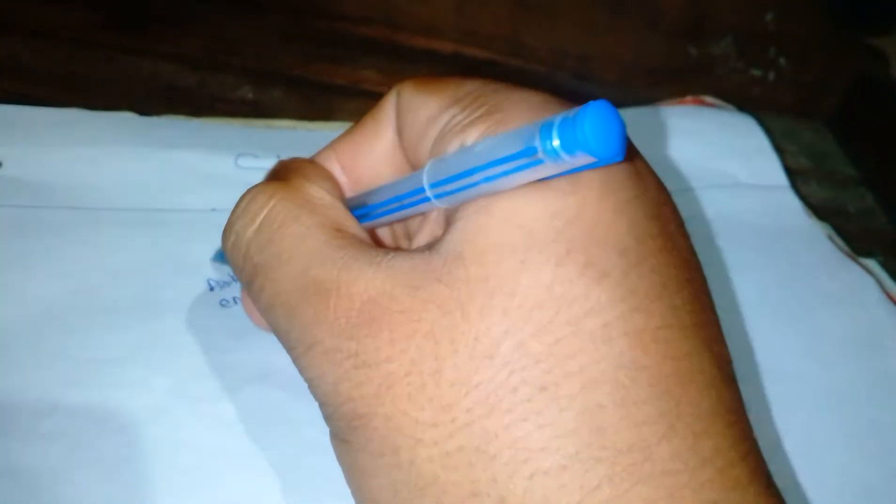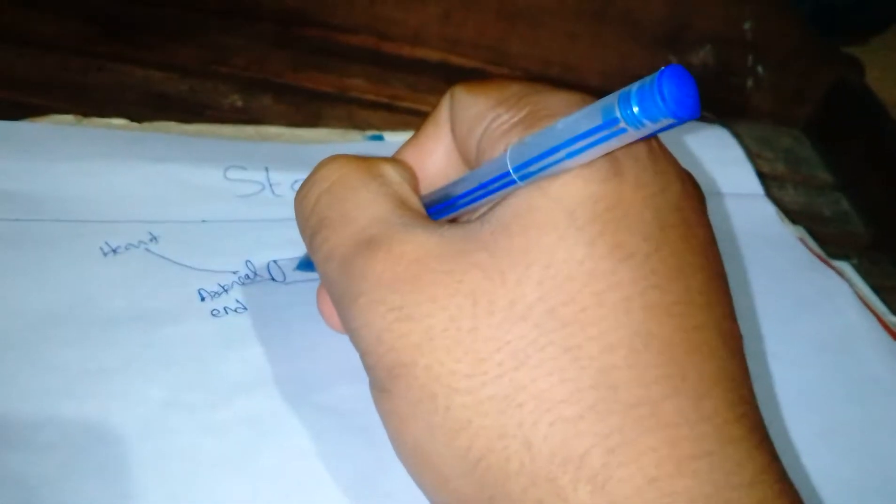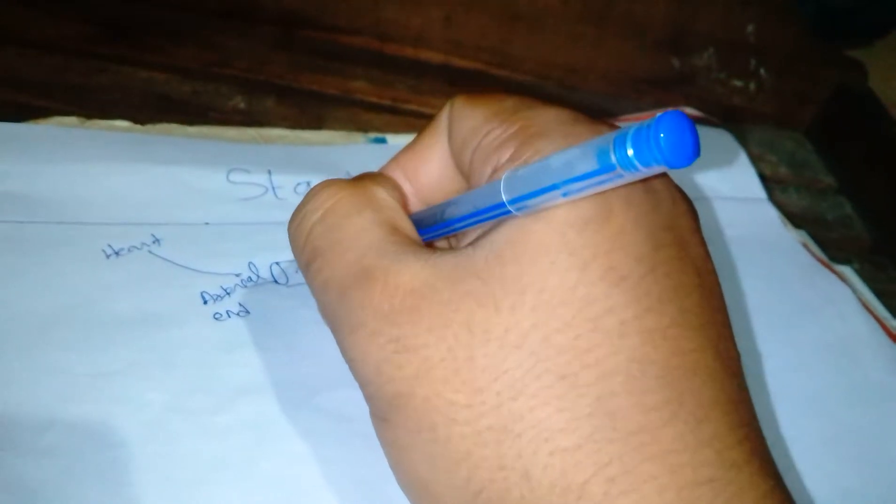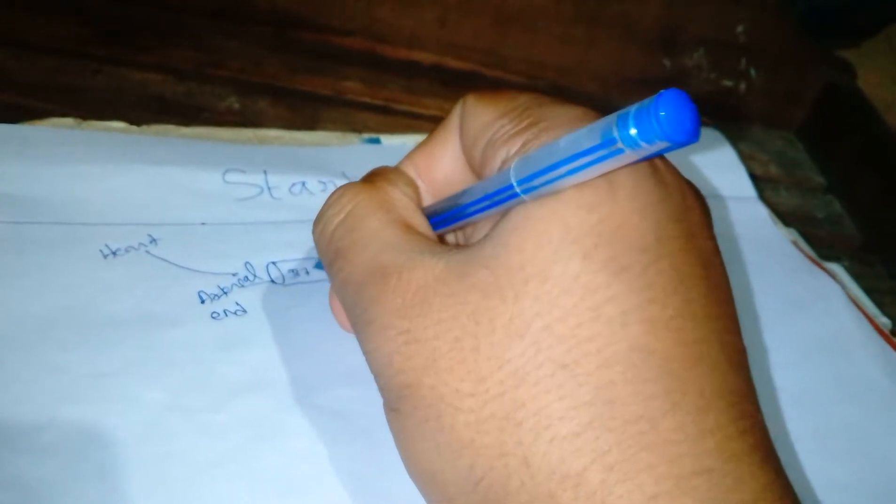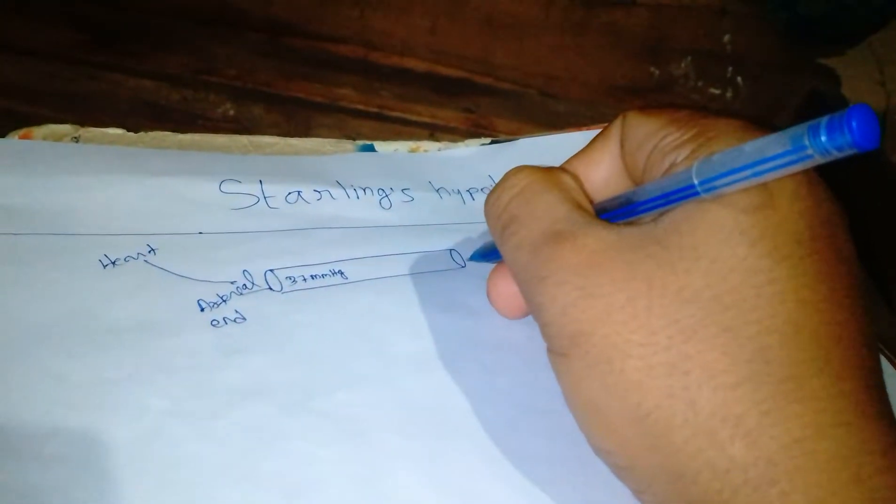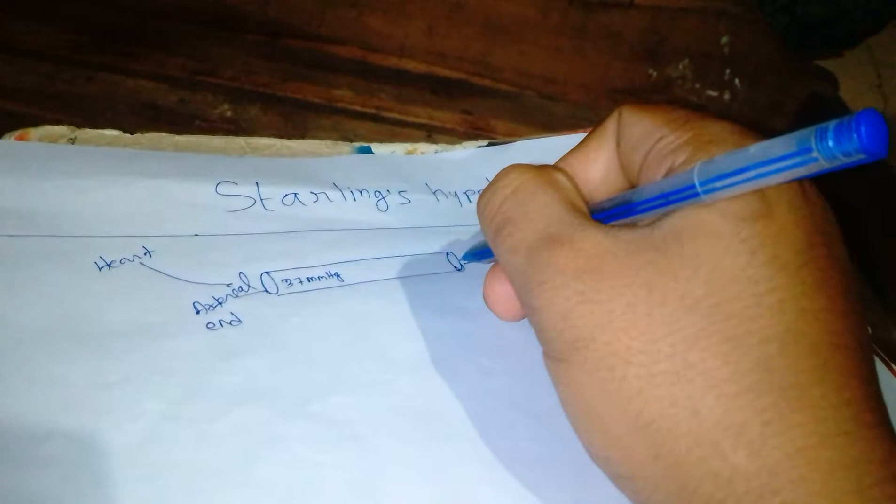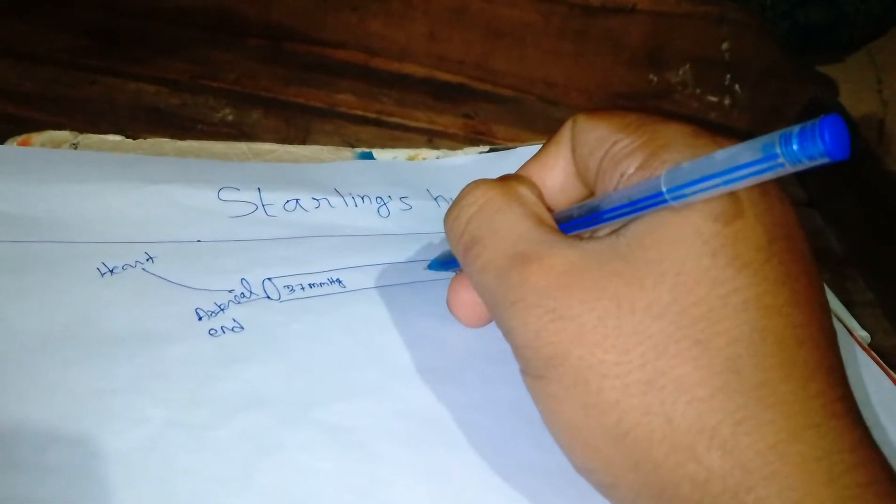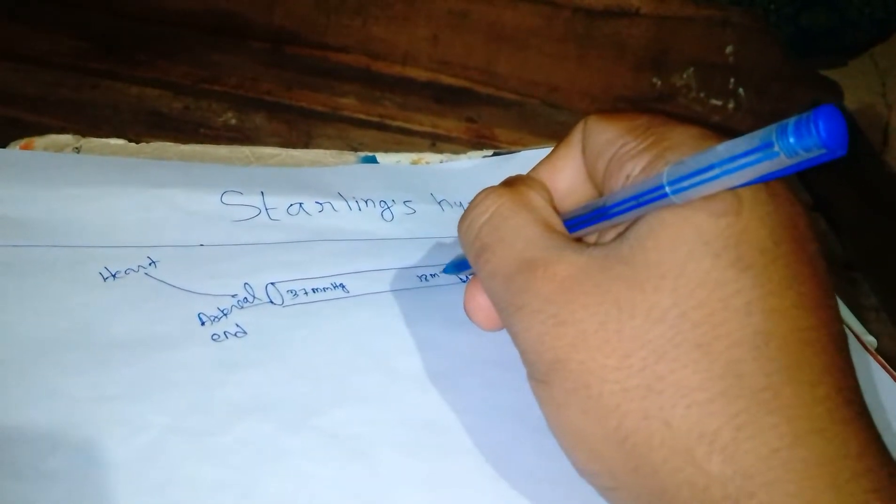And this is the venous end. Here the blood is coming directly from the heart, so the hydrostatic pressure, meaning the blood pressure, will be more. It is around 37 mmHg. And here the venous blood has low hydrostatic pressure in the capillary, so it is around 18 mmHg.